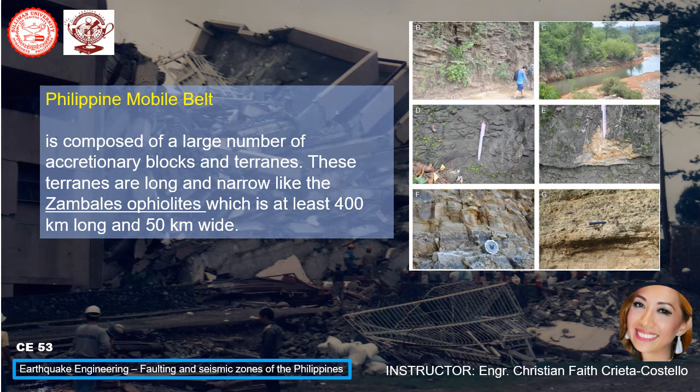The Philippine mobile belt is defined as being composed of a large number of accretionary blocks and terrains. These terrains are long and narrow — like the Zambales ophiolites shown in the photo — which are at least 400 kilometers long and 50 kilometers wide. The ophiolites of the Philippine mobile belt look like these rock formations.